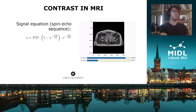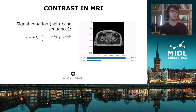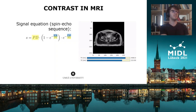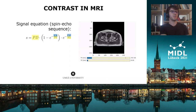For spin echo sequences in MRI, the contrast of a scan is defined by the echo and the repetition times, which determine the weighting of the MR image. As per the signal equation, these two settings set the weights of the three underlying quantitative maps: namely proton density, and the T1 and T2 relaxation times. The settings highlight different tissue properties, so in radiotherapy multiple scans with different contrasts are often performed and used together for subsequent tasks.